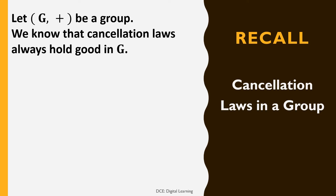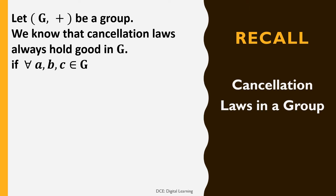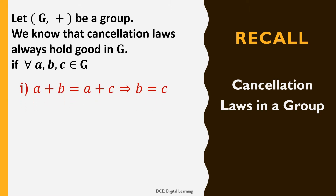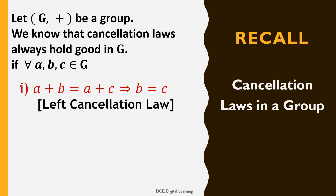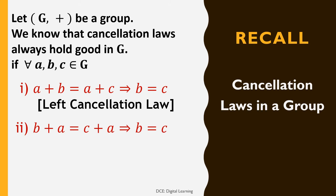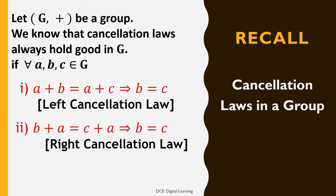For all a, b, c belonging to G: if a + b = a + c implies b = c, then it is called the left cancellation law. If b + a = c + a implies b = c, then it is called the right cancellation law.